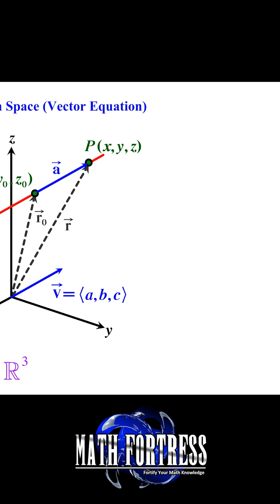Notice from this diagram that vector R can be written as a sum of vector R0 and vector A. Recall from a previous video that the head-to-tail method or triangle law was used to add vectors.